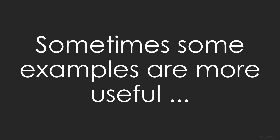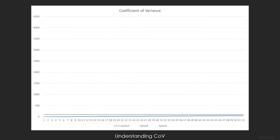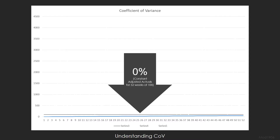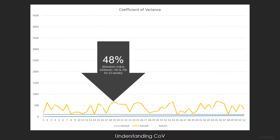Sometimes examples are more useful. Here we have an example of the coefficient of variance being 0, because there is a constant adjusted actuals for 52 weeks of 100. In this second example, the coefficient of variance is 48% — generated by using a random number between 100 and 700 for 52 weeks.